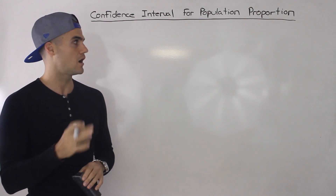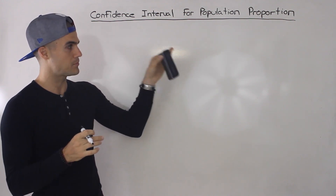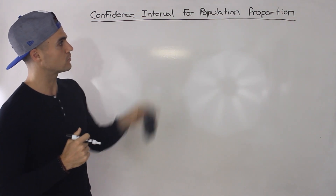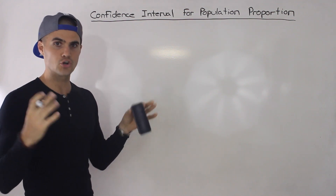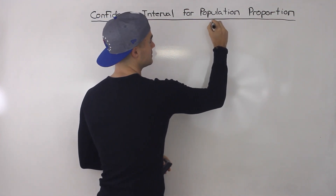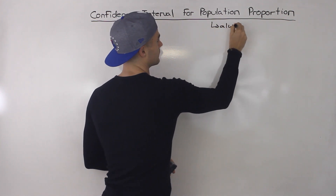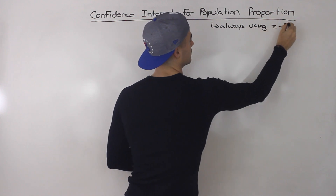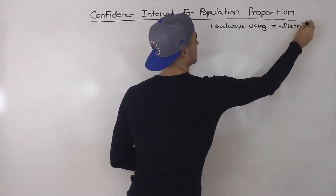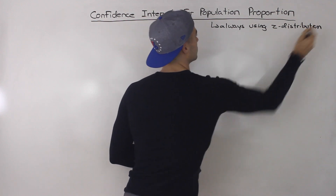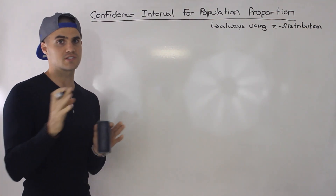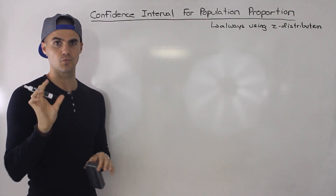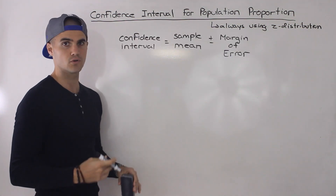So basically it's the percentage of a population that shares some kind of characteristic. When you're dealing with proportions, you're usually dealing with a large enough sample size, so you're always going to be using the Z distribution. You won't have to worry about whether you know the population standard deviation or not — you just always use a Z distribution when dealing with proportions.